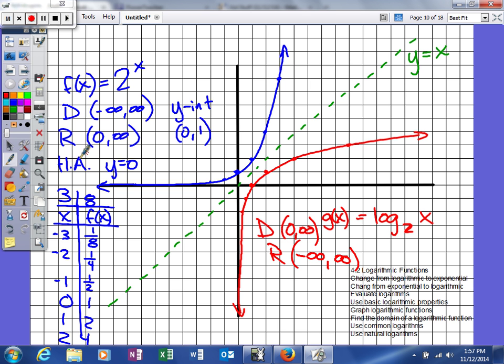We know that the range of our exponential function will be the domain of our logarithm. Here we had a horizontal asymptote at y = 0. This time we'll have a vertical asymptote at x = 0. And we know we had a y-intercept of (0, 1), so therefore this time all of your logarithmic functions will have an x-intercept of (1, 0).